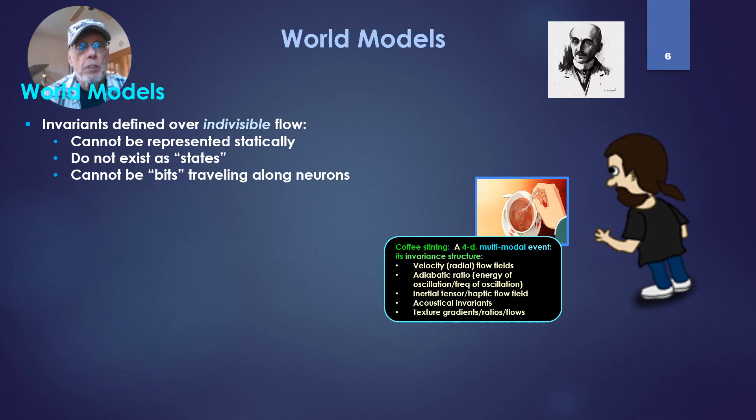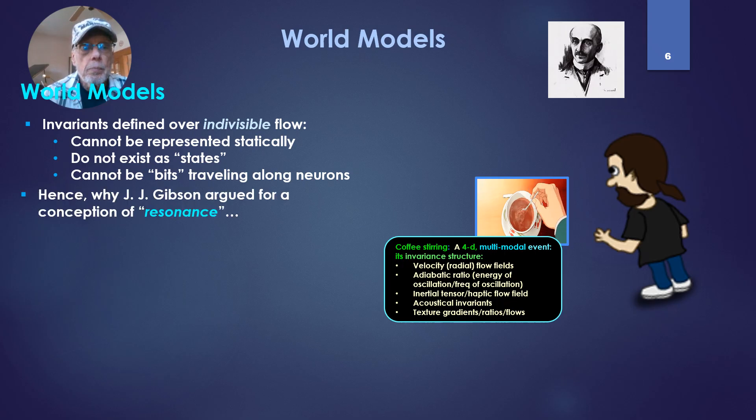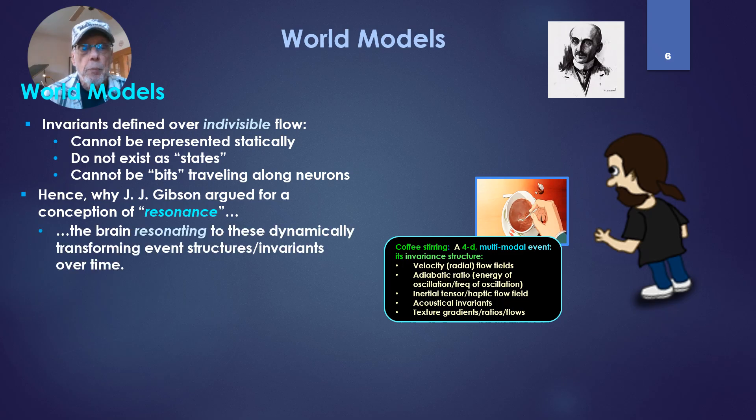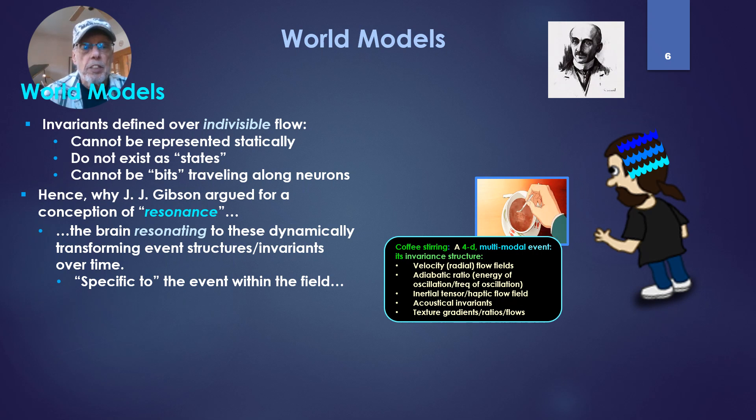So invariants defined over an indivisible flow. Well, these cannot be represented statically. They do not exist as states, static state after static state. They cannot be bits traveling along neurons. This is why J.J. Gibson argued for a conception of resonance. That is, the brain resonating to these dynamically transforming event structures, slash invariants, with all their invariants, over time. And that resonance specific to the event within the field, just where it says it is.